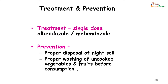Treatment and prevention of whipworm infection: treatment is done with a single dose of albendazole or mebendazole. Prevention is by proper disposal of night soil and washing of uncooked vegetables and fruits before consumption. We have now completed two worms — roundworm, which had a modified direct cycle, and whipworm, which has a direct cycle.